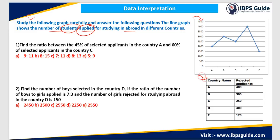Here again, a table is given showing the name of the country and rejected applicants. In the line graph, they give us the total number of students who have applied, and this tabular graph gives us the total number of students who are rejected. So in country A, 400 students are rejected. In country B, 300 are rejected. Likewise, you can find for C, D and E.